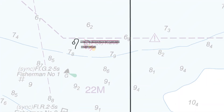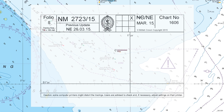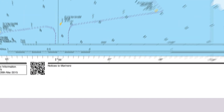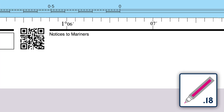Now lay the tracing back over the chart to check that the correct buoy and description have been deleted. Once all the updates have been applied, add the NM update number to the chart's notices to mariners section in the bottom left corner of the chart.